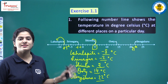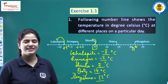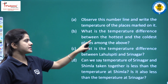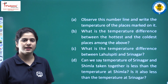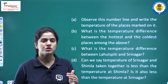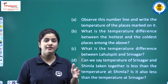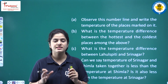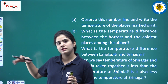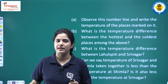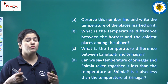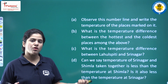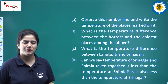So students, this is the first part of your question. Let's see the next part: what is the temperature difference between the hottest and the coldest places? It is clear that the hottest place will be on the rightmost side of the number line and the coldest place on the leftmost side. The more negative the number, the smaller it is, the colder the place. And the more positive the number, the hotter it will be.